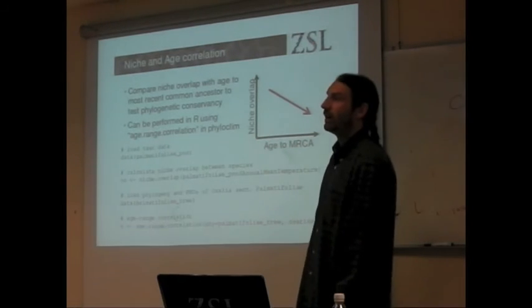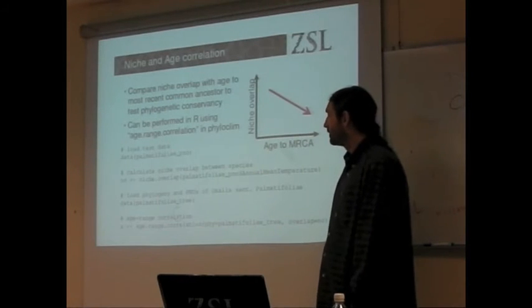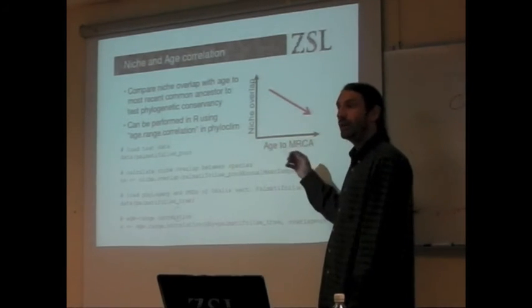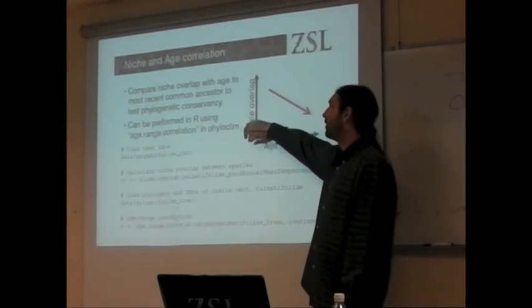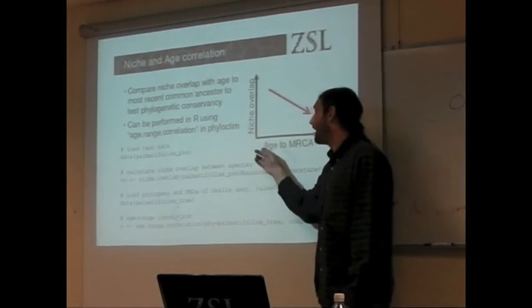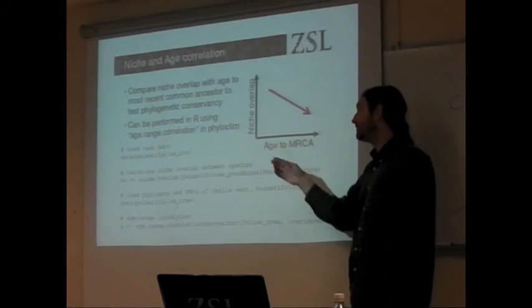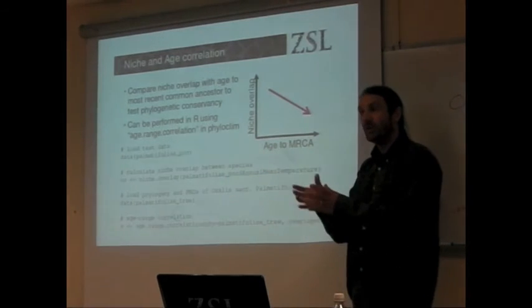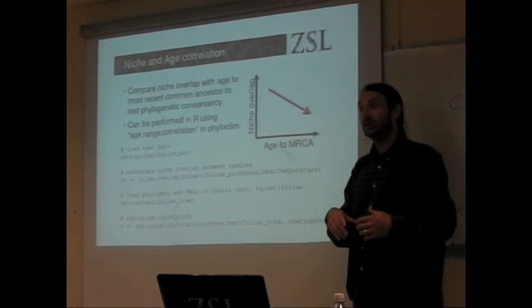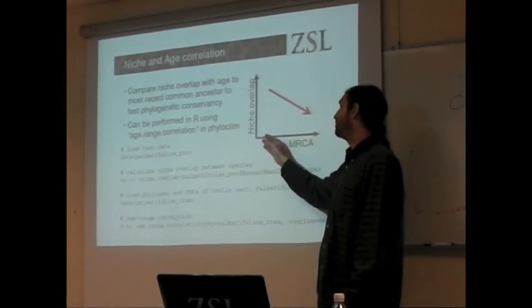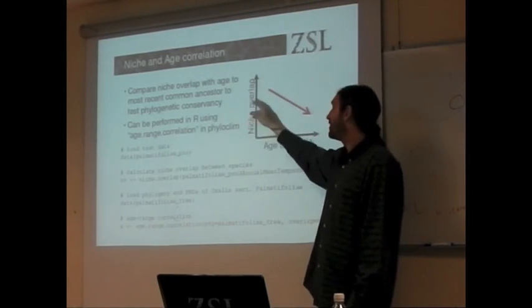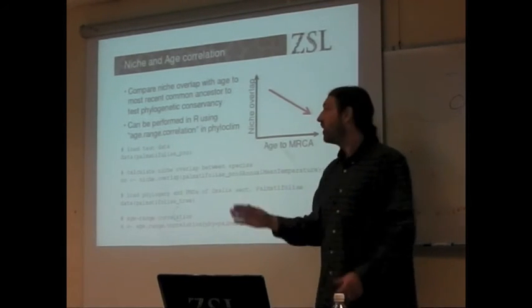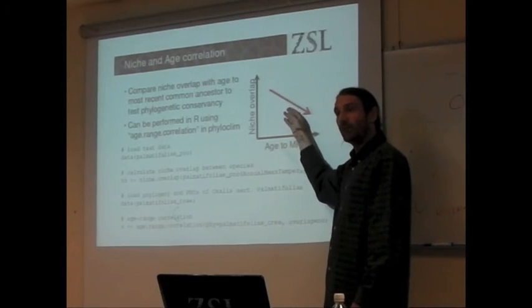So once we have our niche correlations, we've tried to look at the phylogenetic pattern for these. If we have a dated tree, we can look at a correlation between our niche overlap, our niche correlation, and the age to the most recent common ancestor. And again, this is a second test of the phylogenetic conservancy of niches, where the more recent divergences are more closely related species. And if we have niche conservancy, we would expect that overlap between those niches to be higher. As we move further away in time, so we have a larger age to the most recent common ancestor, those species are less closely related, we would expect a lower niche overlap between those species.